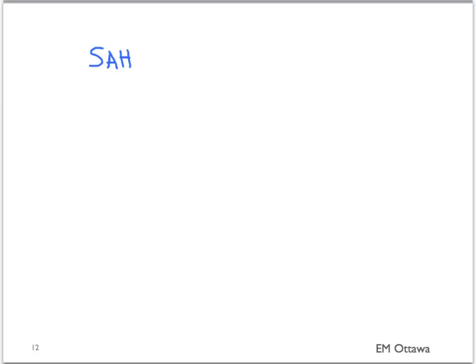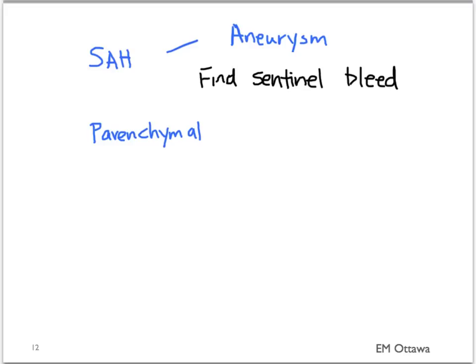In summary, we discussed subarachnoid hemorrhage and intracerebral hemorrhage. Both can be caused by trauma; however, we need to worry about aneurysms causing subarachnoid hemorrhage, and we would want to pick up the aneurysm before it ruptures by diagnosing sentinel bleeds. For parenchymal bleeds, the main risk factor is hypertension. In the next part, we will discuss physical examination and investigations. Thank you for watching.